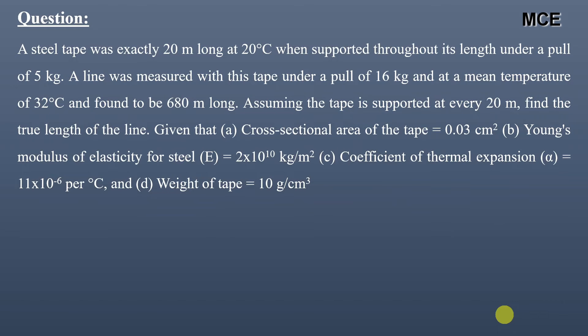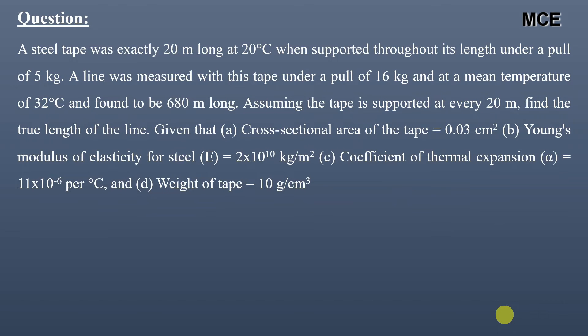The question states that a steel tape was exactly 20 meters long at 20 degrees centigrade when supported throughout its length under a pull of 5 kg. A line was measured with this tape under a pull of 16 kg and at a mean temperature of 32 degrees centigrade, and it was found to be 680 meters long. The tape is supported at every 20 meters.